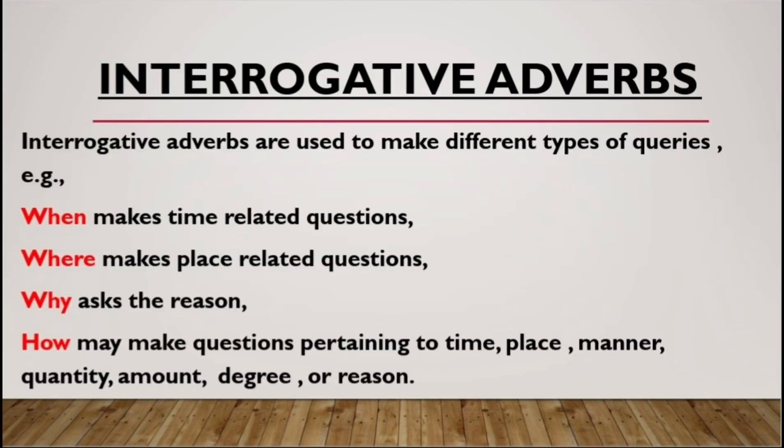Interrogative adverbs are the adverbs that are used to make different types of queries, inquiries, or to ask questions. An interrogative adverb is used to ask a question, and there are four types of interrogative adverbs: when, where, why, and how. Now let's talk about the uses of each one of them.